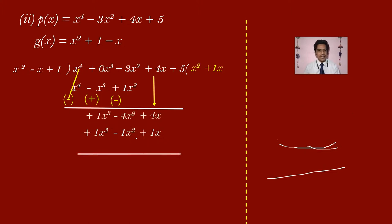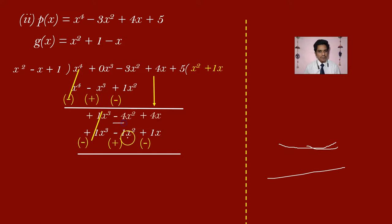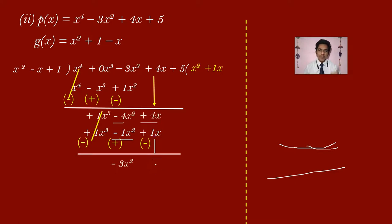Do the subtraction once again. Plus x cube becomes minus x cube, minus x square becomes plus x square. Plus x cube minus x cube cancels to 0. Minus 4 plus 1 gives minus 3, so minus 3x square. Plus 4 minus 1 gives plus 3x. Carry plus 5.